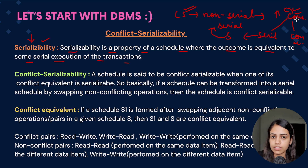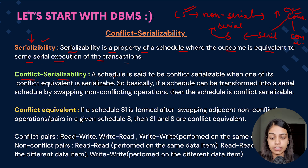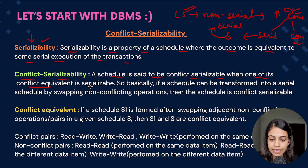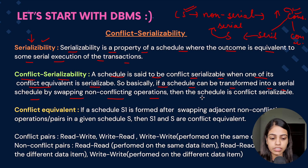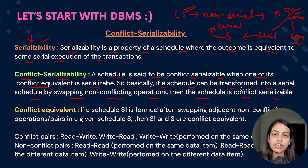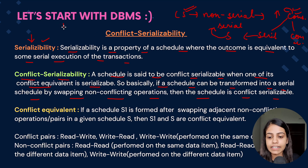What is conflict serializability? A schedule is said to be conflict serializable when one of its conflict equivalents is serializable. Basically, if a schedule can be transformed into a serial schedule by swapping non-conflicting operations, then the schedule is conflict serializable.